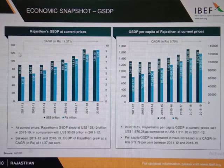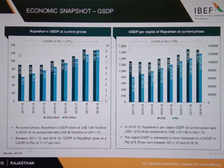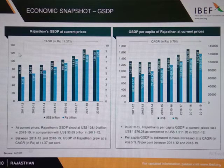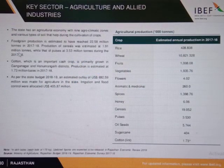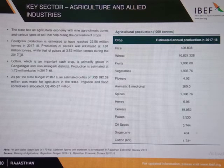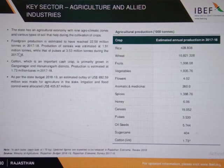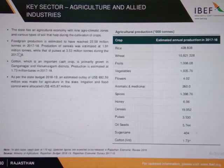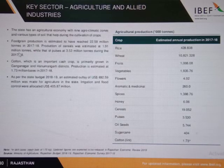Rajasthan's GSDP stood at US dollar 128.1 billion. Per capita income of Rajasthan also keeps increasing year on year. The state has an agricultural economy with 9 agro-climatic zones. Food grain production reached 22.58 million tons in 2017-18.